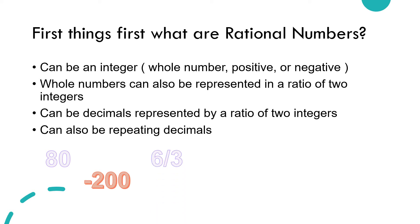Long story short, rational numbers are positive or negative whole numbers, meaning the decimal stops, non-repeating decimals and repeating decimals.